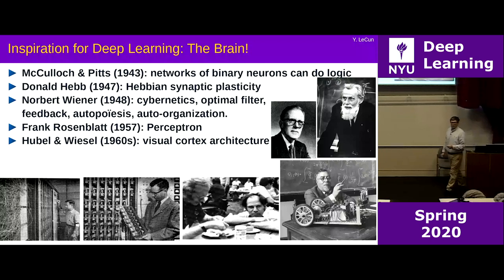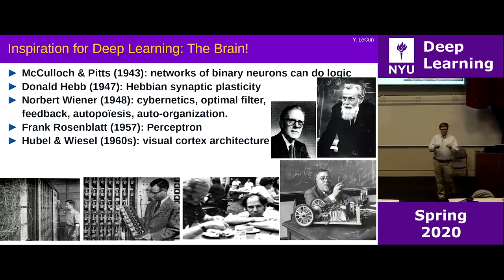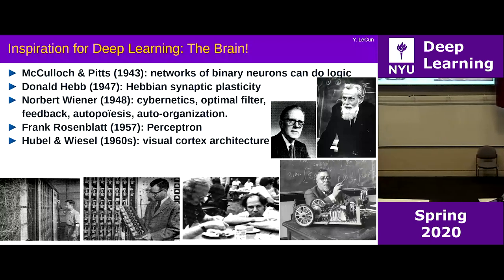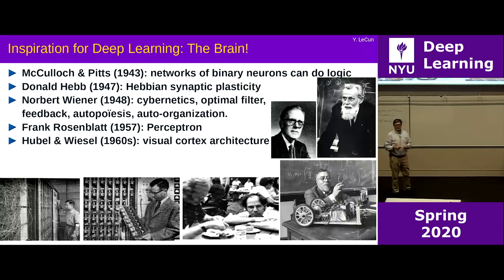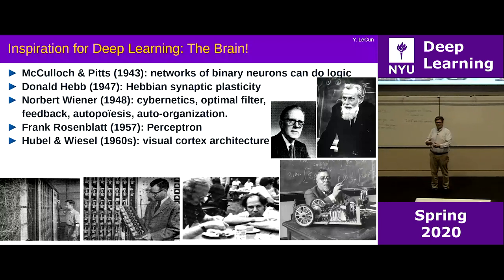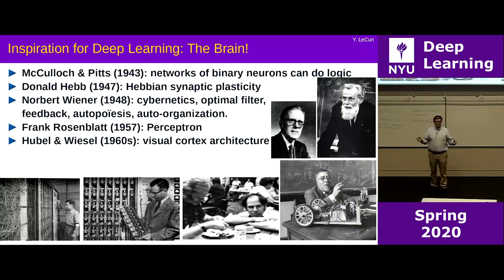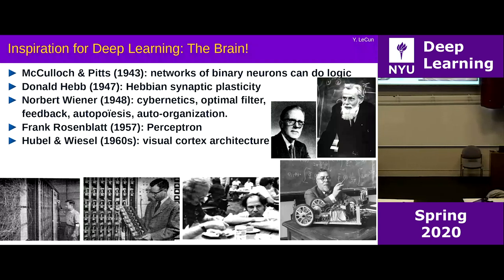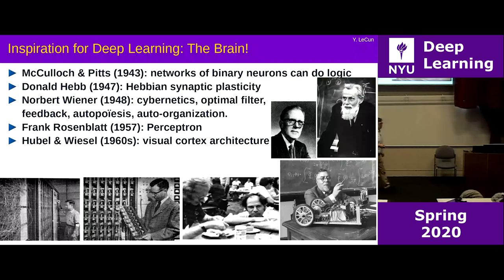That led Frank Rosenblatt to imagine learning algorithms that modified the weights of very simple neural nets. What you see here is Frank Rosenblatt and the perceptron — a physical analog computer, not a three-line Python program. It was a gigantic machine with wires and optical sensors to show it pictures. It had neurons that could compute a weighted sum, with the weights being motorized potentiometers. What he's holding is a module of eight weights with those motorized potentiometers on them.